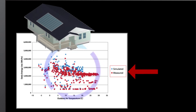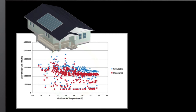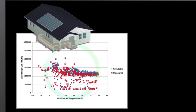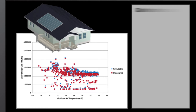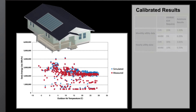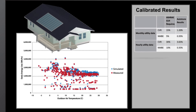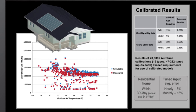However, AutoTune's advanced artificial intelligence has been trained to quickly and systematically change hundreds of software inputs to create better software models of the building. A report is then created which shows how well the calibration performed.